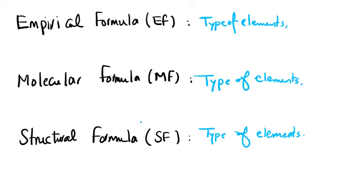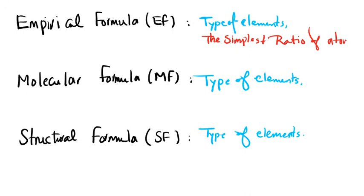Whenever we talk about empirical formula, we need to add this information as well: the simplest ratio between the atoms or elements. This is the specific information that belongs only to empirical formula.